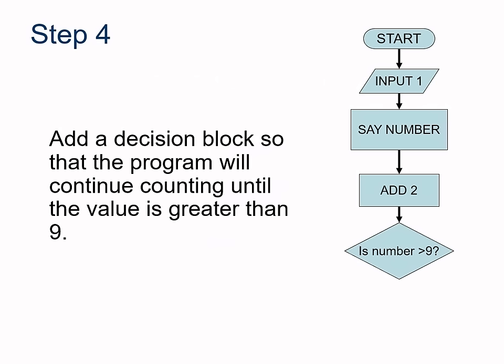Next, we're going to add a decision block. Do we go on or are we done? We need a decision block to determine that. Are we greater than 9 or do we need to keep going?